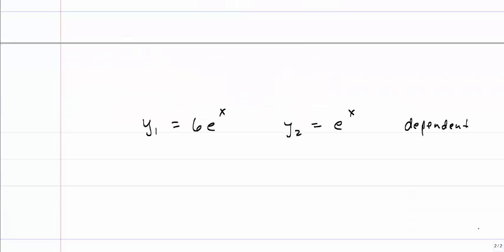Sometimes it's really easy to figure out whether or not two solutions are dependent. For instance, y1 is simply six times y2, so that's why these two are dependent. That is, they could not create a general solution for a differential equation.